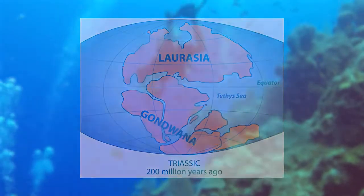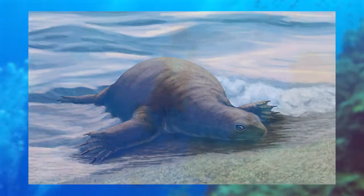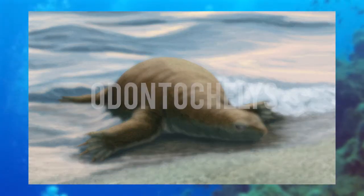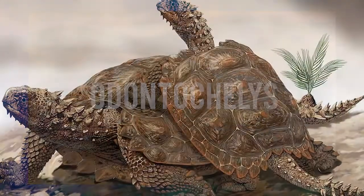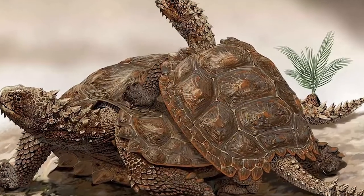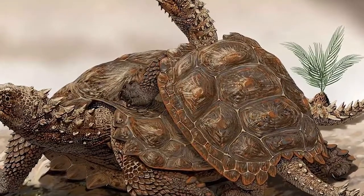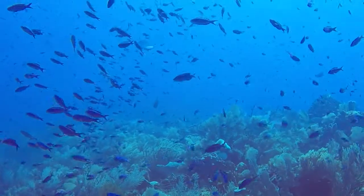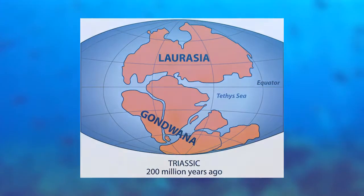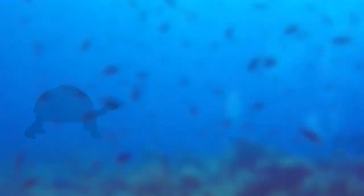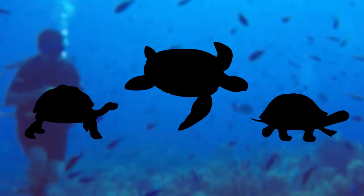Evolving from their ancestor, the Odonocheles, which only had underbelly protection, this stem turtle had evolved a full shell. This adaptation was made in order for the species to protect themselves from other land-roaming creatures. It is hypothesized that the breaking up of these supercontinents, Laurasia and Gondwana, ultimately caused the stem turtle to diverge into the terrapin, turtle, and tortoise we know today.